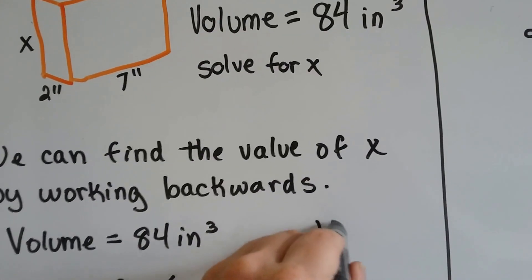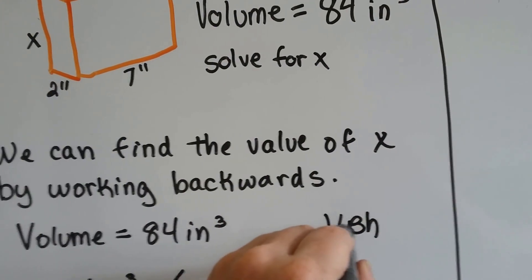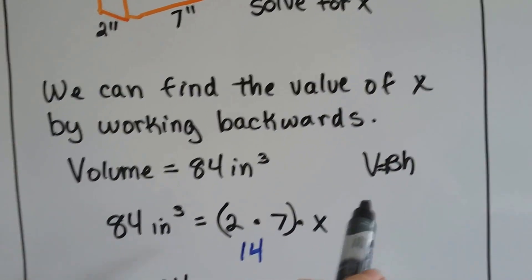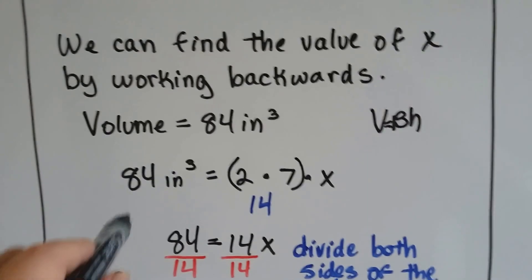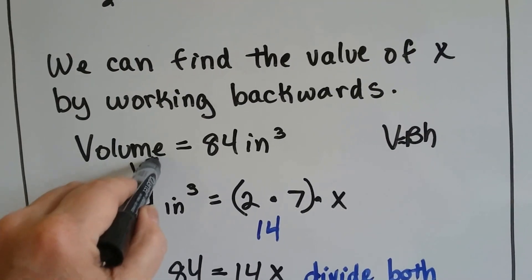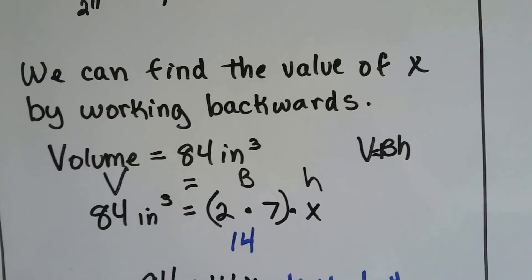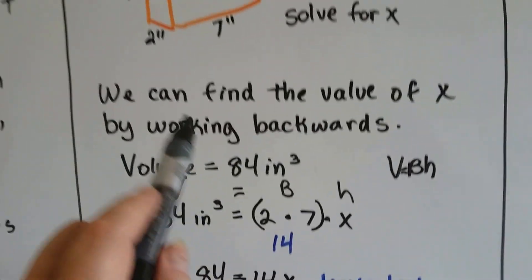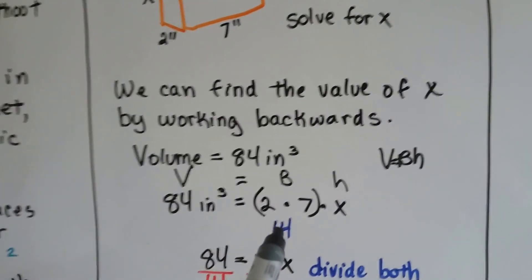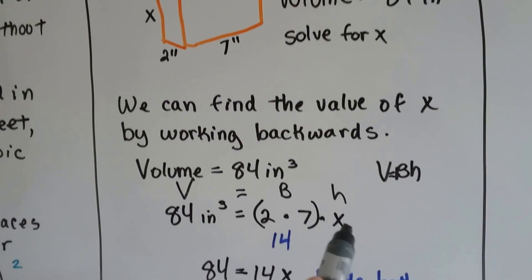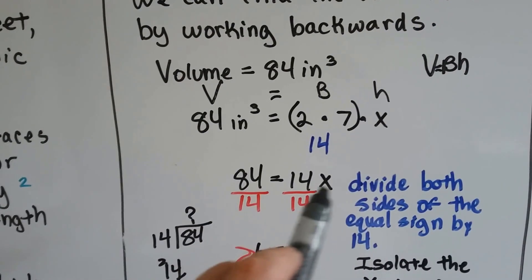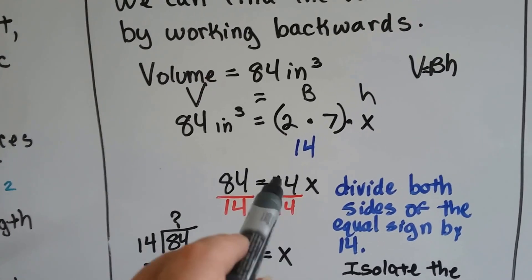Remember the formula was V = bh for volume. Here's the v, that's the v part of the formula, and we need to do the base and the height. We know the base is 2 times 7 which is 14, but we don't know the height x. So what we do is we put the 14 and x right next to each other, that means multiply in algebra.